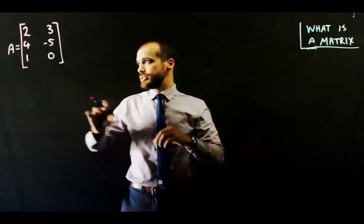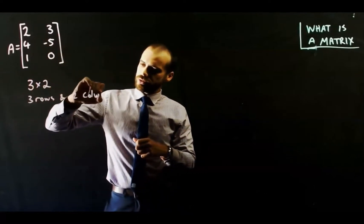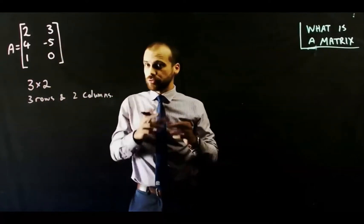All right, so this guy's going to talk you through matrices. He's done it before. You've watched these videos before, so this is just a recap. Now, that's a 3 by 2 matrix. It's got 3 rows and 2 columns.